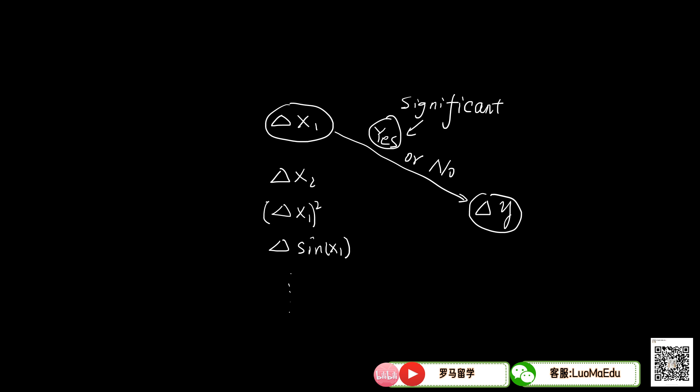So here, we say attributed to or because of does not mean that x and y have a causal correlation. It's just a statistical language to say the change of y is due to the change of x.